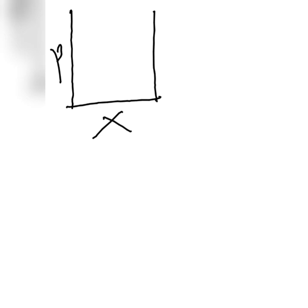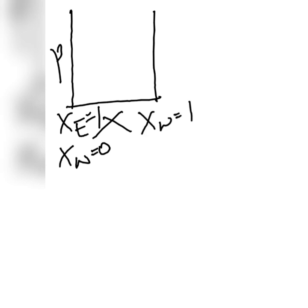On the extreme left the mole fraction of ethanol is 1, meaning pure ethanol, so the water component is 0. On the extreme right the mole fraction of water is 1, meaning pure water, and ethanol is 0. We are finding the curve with reference to Raoult's law. If the solution obeyed Raoult's law we would get a straight curve, but the ethanol-water mixture shows a positive deviation from Raoult's law.